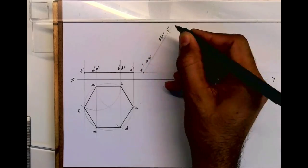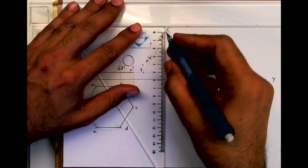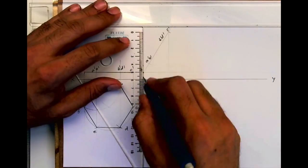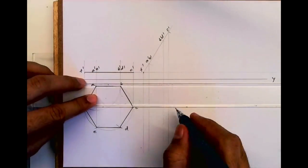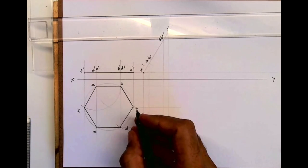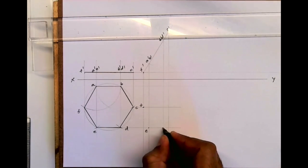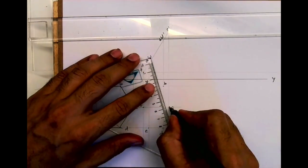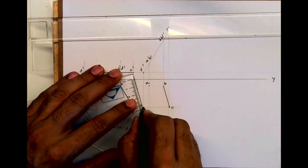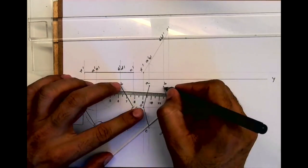From here also project all these points: F, E, D, C, B, and A. This is the top view and this is the front view, which is inclined at 60 degrees to HP.